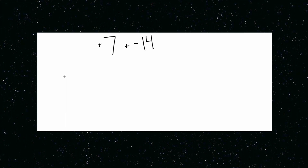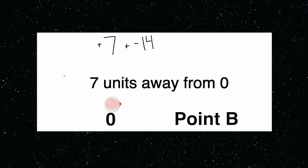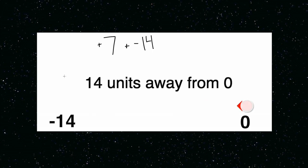One method when adding integers with different signs is the absolute value method. Absolute value is the distance an integer is away from zero. An integer's absolute value is always positive. Why? Distance is measured in positive units. You can't have a negative yard or foot or inch.